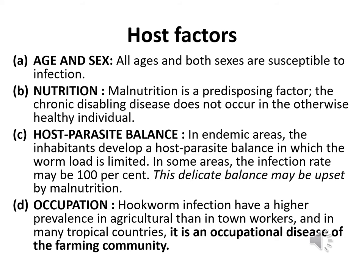Regarding host factors, all ages and both sexes are susceptible to infection. Malnutrition is a predisposing factor; the chronic disabling disease does not occur in otherwise healthy individuals. In endemic areas, inhabitants develop a host-parasite balance in which the worm load is limited; in some areas the infection rate may be nearly 100 percent. This delicate balance may be upset by malnutrition. Hookworm infection has a high prevalence in agriculture workers compared to town workers, and in many tropical countries it is an occupational disease of the farming community.